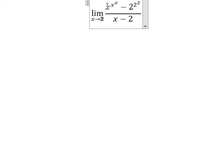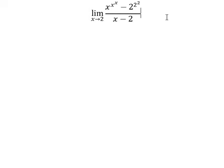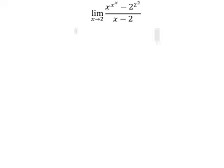When S approaches to number 2, we put number 2 in here, and number 2 in here. So this one you got number 0, and this one you got number 0. So we have 0 over 0.